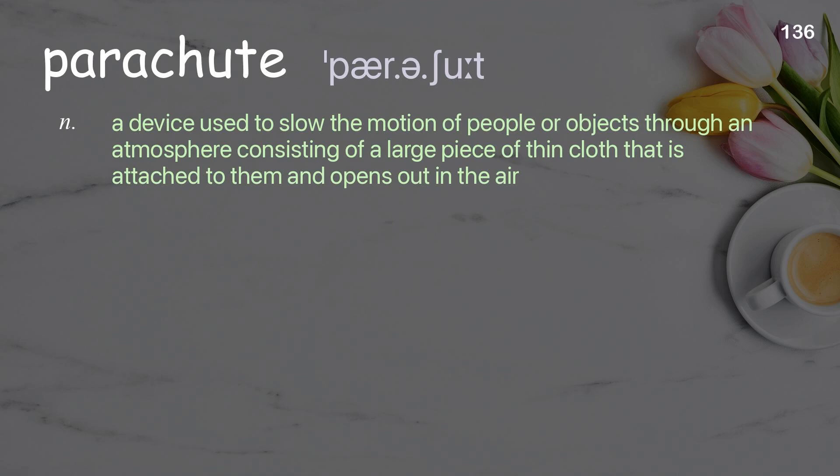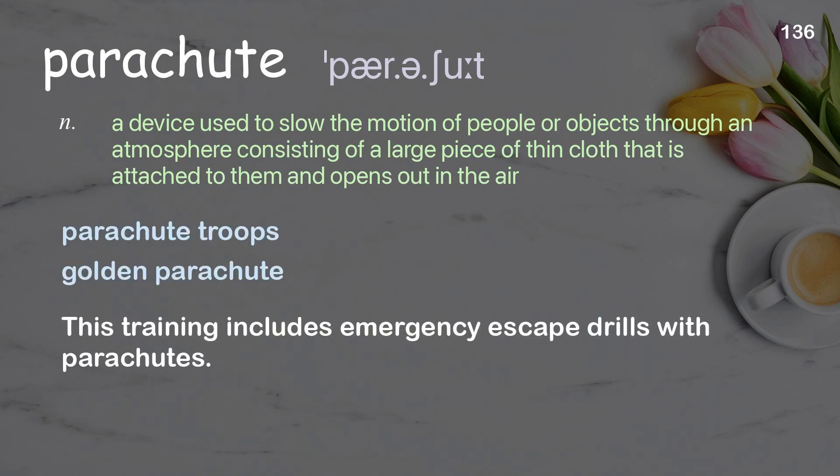Parachute: a device used to slow the motion of people or objects through an atmosphere, consisting of a large piece of thin cloth attached to them that opens out in the air. Examples: parachute troops, golden parachute. This training includes emergency escape drills with parachutes.